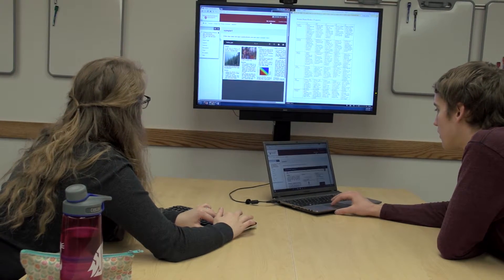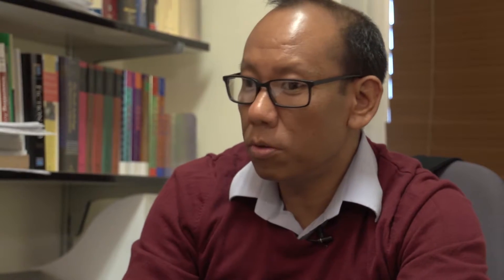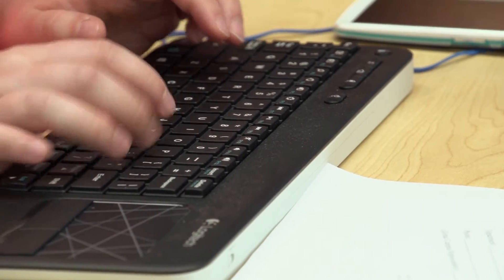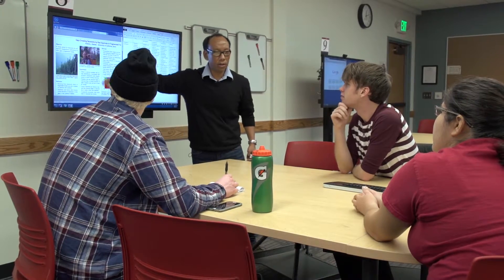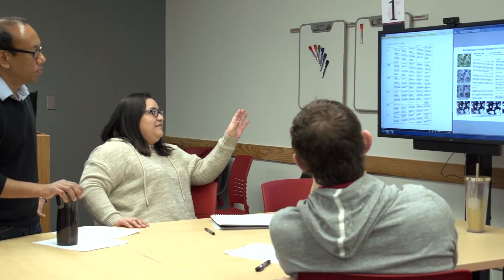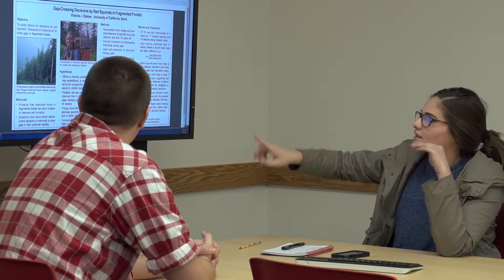Each group had to judge the poster and assign a numerical grade assessment for each category. You look at the headings, the spacing, the aesthetics, the color schema, the clarity of information, and how the poster was structured so that the reader could easily go from step 1 to 2 to 3 to 4 to 5. If that wasn't happening, they had to offer a critique and give a justification.